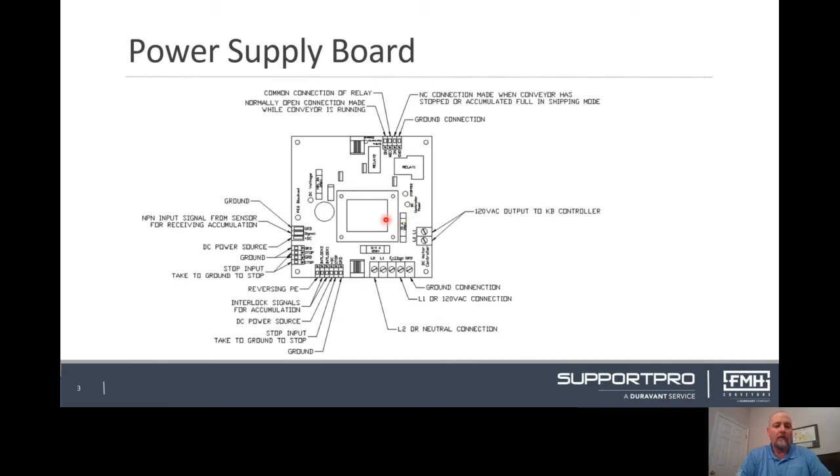An amber light is illuminated when the board receives an accumulated full signal in shipping mode or the photo-eye over the power box is blocked in receiving mode.